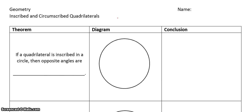Now, a quadrilateral is inscribed in a circle, then the opposite angles are supplementary. Now, that's the new theorem. But, let's focus on this word for a minute, inscribed.